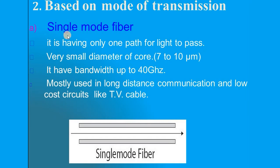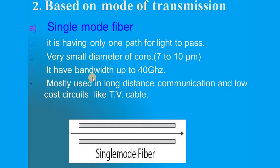Based on the mode of transmission, fibers are classified into single mode and multi-mode. Single mode — from the name itself — means there is only a single ray path. The core has a very small diameter of 7 to 10 micrometers. It can transmit bandwidth up to 40 gigahertz and is generally used for long distance communication and low cost circuits like TV cables.